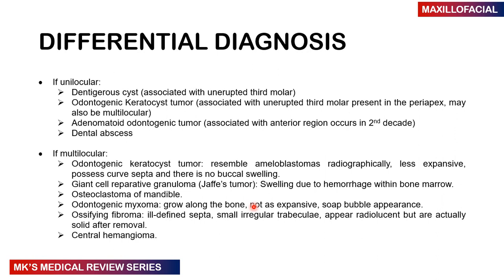Differential diagnoses for a unilocular lesion include dentigerous cyst, odontogenic keratocystic tumor associated with an unerupted third molar, adenomatoid odontogenic tumor seen in the anterior region in the second decade, and dental abscess. For a multilocular lesion, consider odontogenic keratocystic tumor — which is less expansive with curved septae and no buccal expansion — giant cell granuloma, osteoclastoma of the mandible, odontogenic myxoma, ossifying fibroma, and central hemangioma.